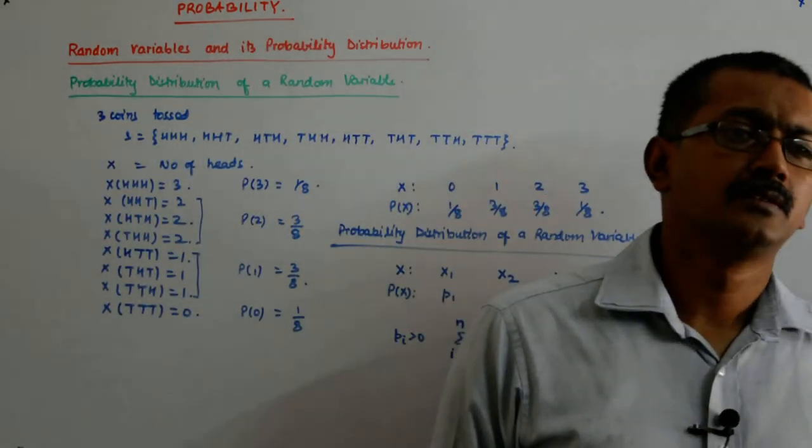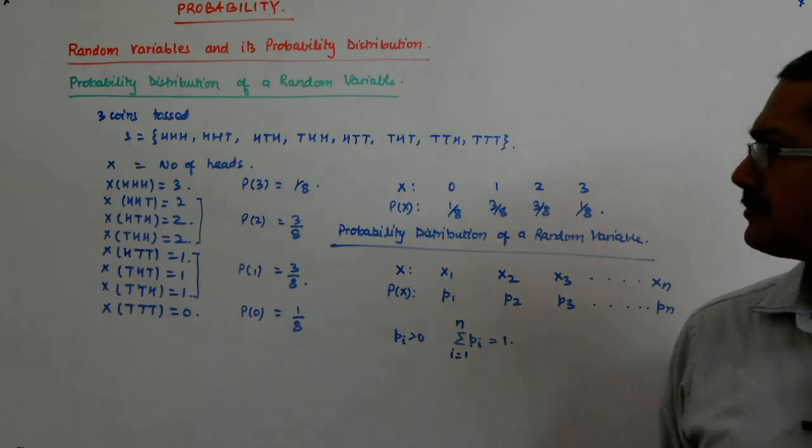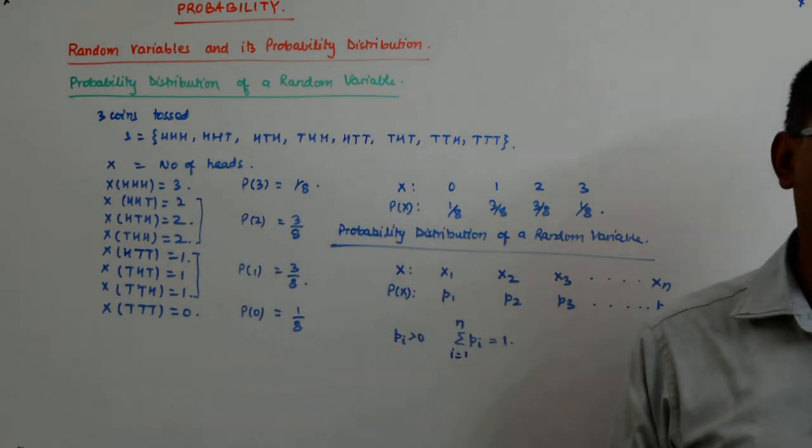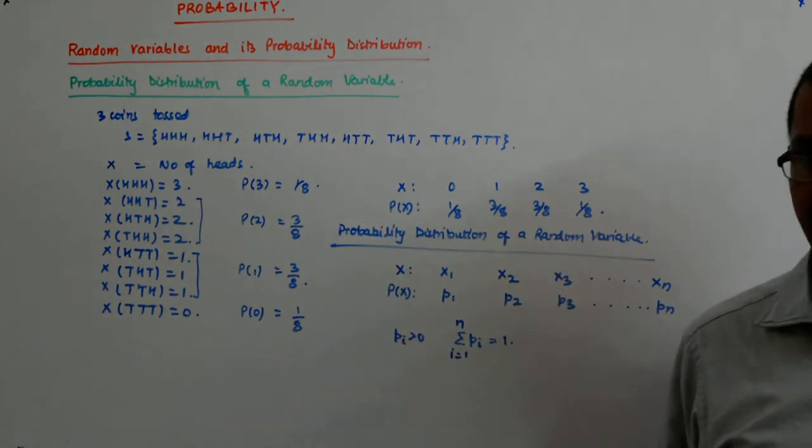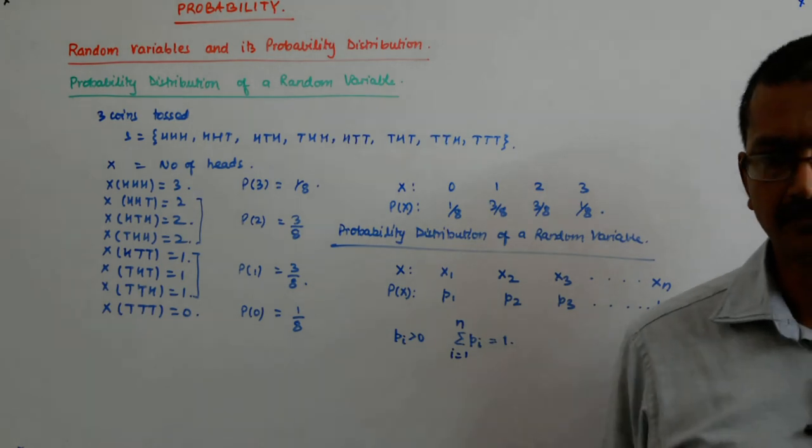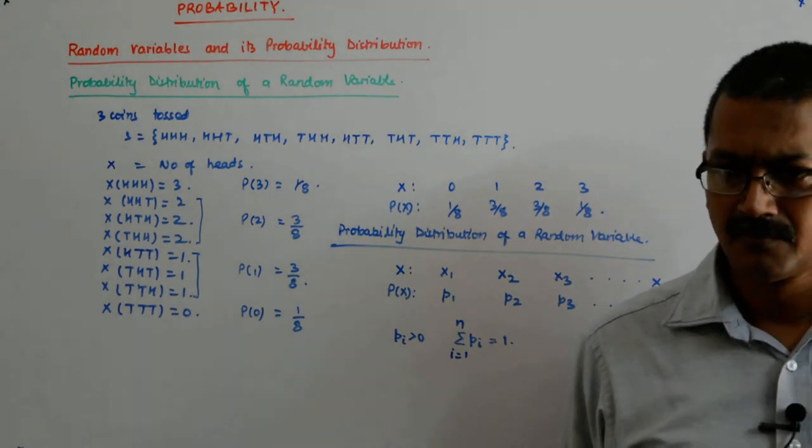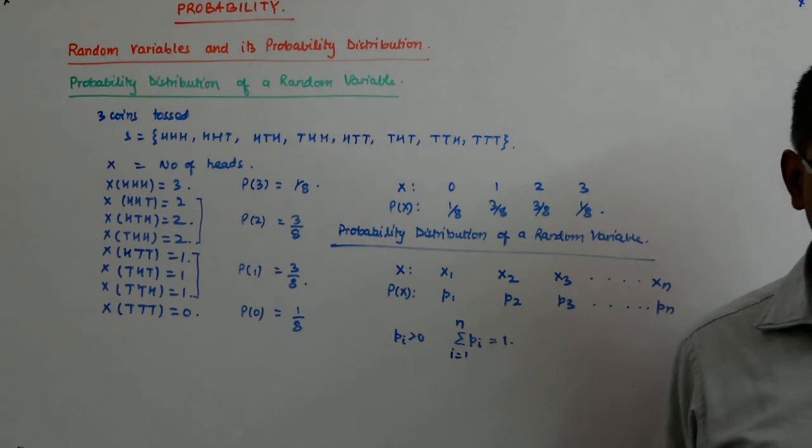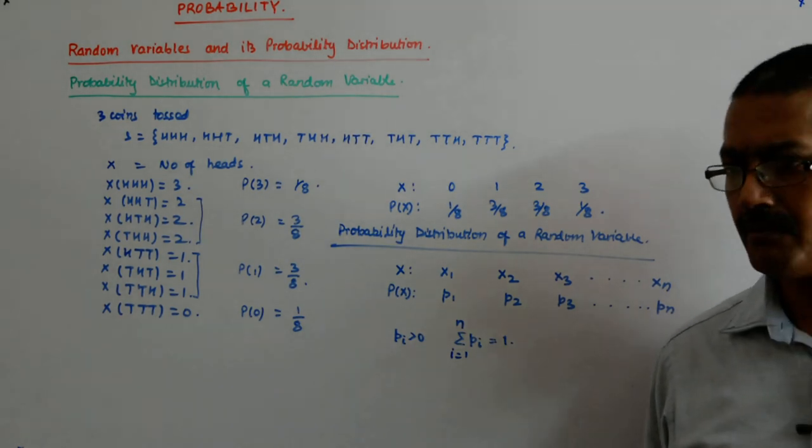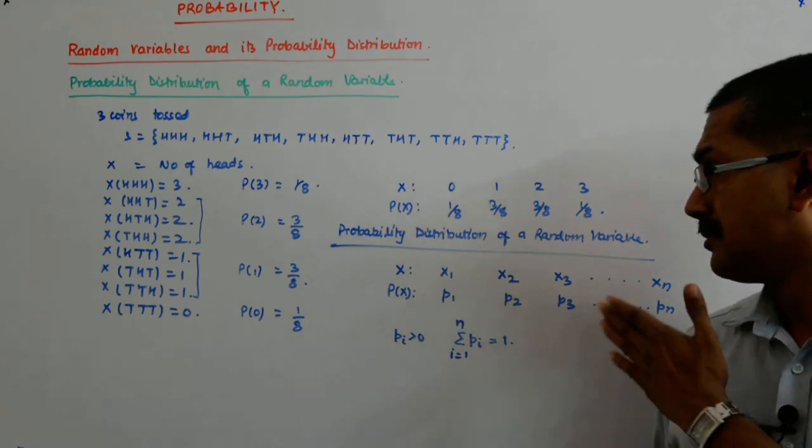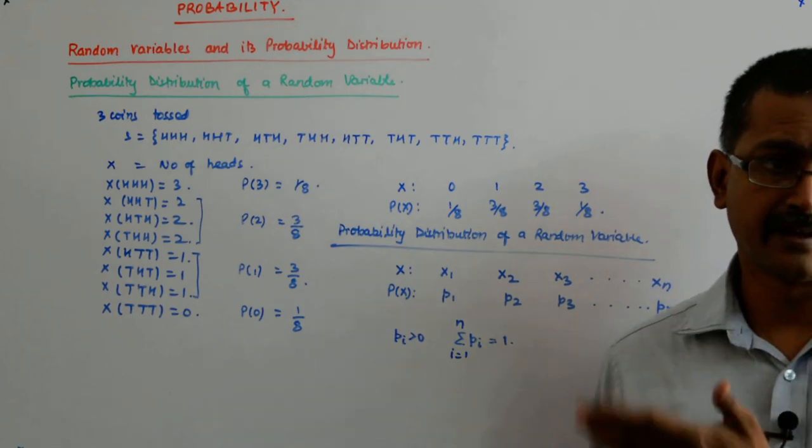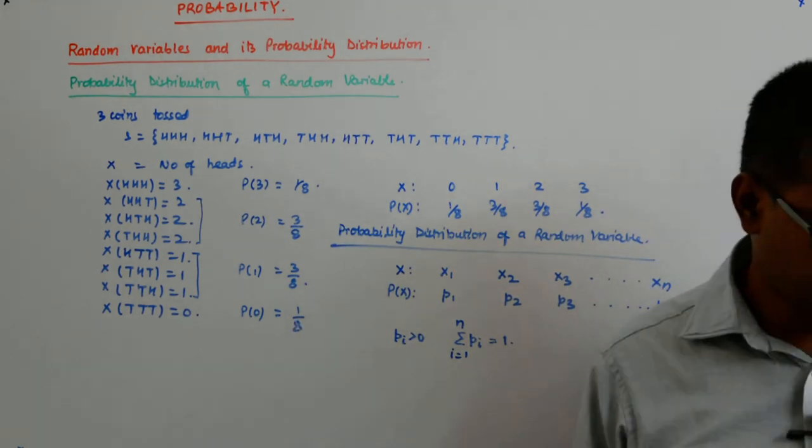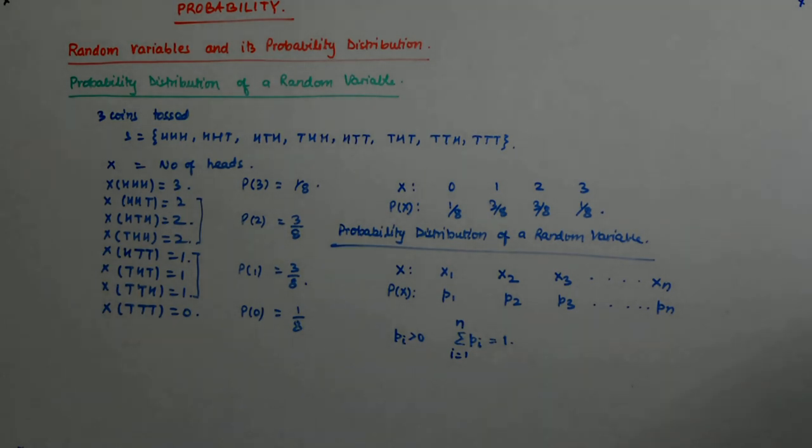This is called the probability distribution of a random variable. So, the case that we had just defined as the number of heads while tossing 3 coins, this is the probability distribution of that. We first defined the random variable. Then, we are defining the probability distribution of the random variable. Now, we will go ahead and you can solve a problem or two.